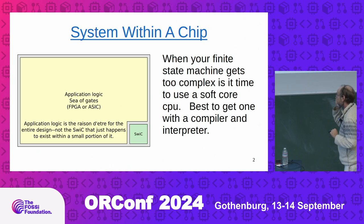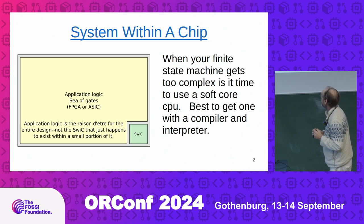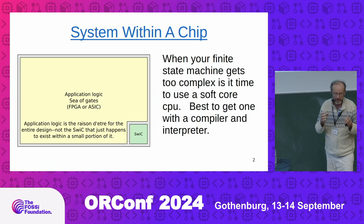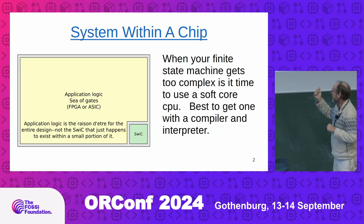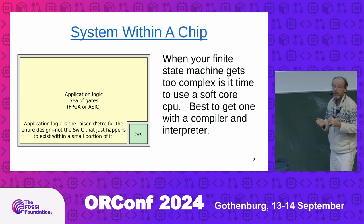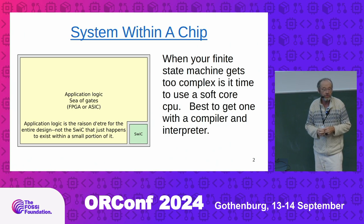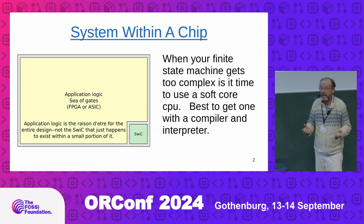So we're interested in a system within a chip. You get to the point where your finite state machine is too large or too complex. You can choose a soft core. Most people choose a RISC-V soft core, but you can also choose a register machine, or you can choose a stack machine.